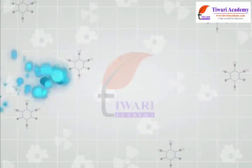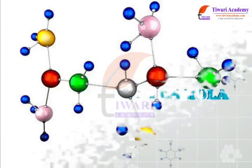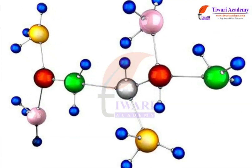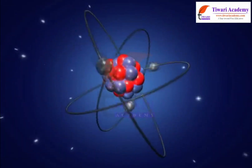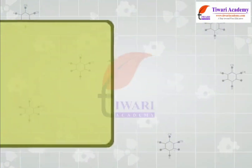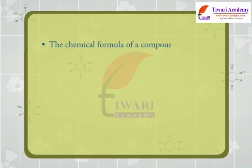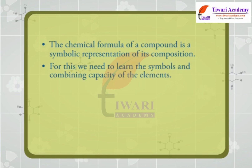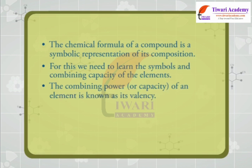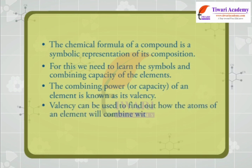Writing the chemical formula. Dear students, a chemical formula is a way of expressing information about the proportions of atoms that constitute a particular chemical compound. The chemical formula of a compound is a symbolic representation of its composition. For this, we need to learn the symbols and combining capacity of the elements. The combining power or capacity of an element is known as its valency. Valency can be used to find out how atoms of one element will combine with atoms of another element to form a chemical compound.